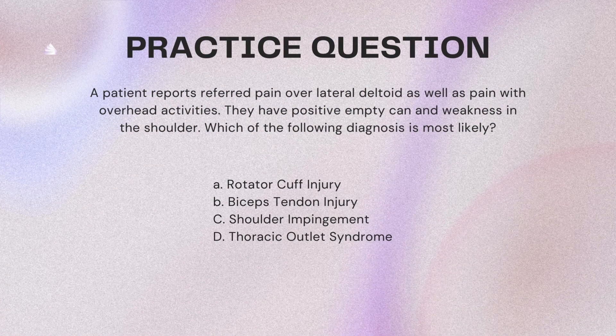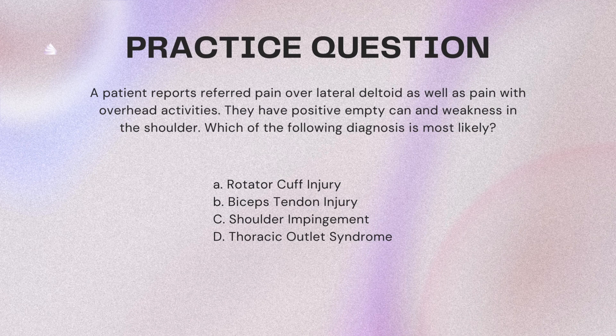Practice question: A patient reports referred pain over the lateral deltoid as well as pain with overhead activities. They have a positive empty can and weakness in the shoulder. Which of the following diagnoses is most likely? A, rotator cuff injury. B, biceps tendon injury. C, shoulder impingement. D, thoracic outlet syndrome. Please pause if you're not ready to review. This is a differential diagnosis question. We are told that a patient has pain over their lateral deltoid as well as pain with overhead activities.